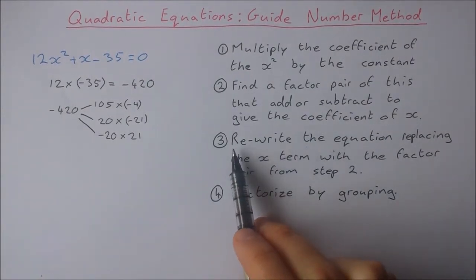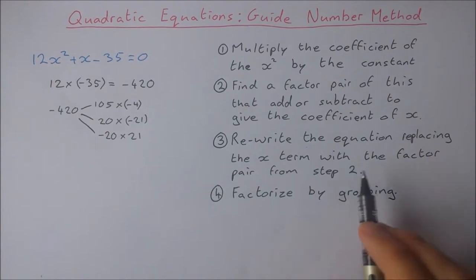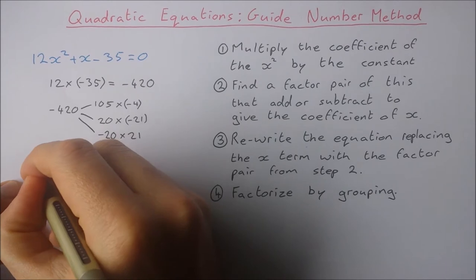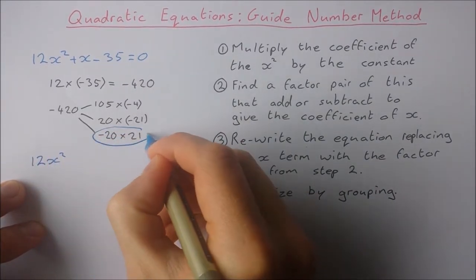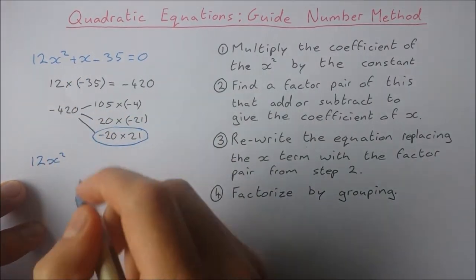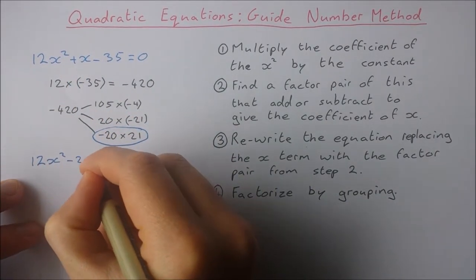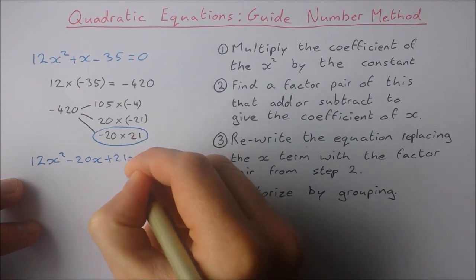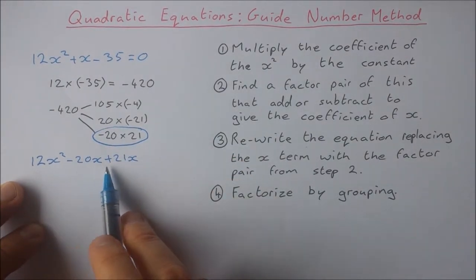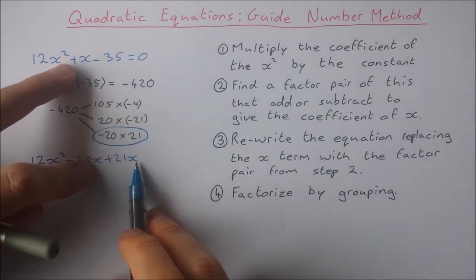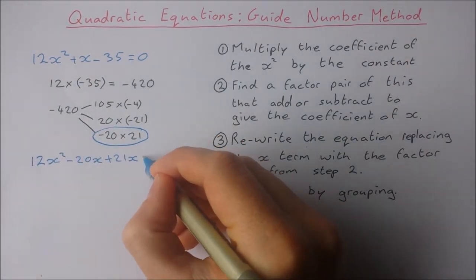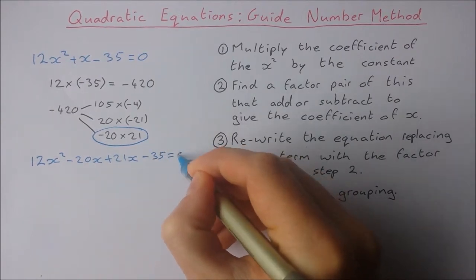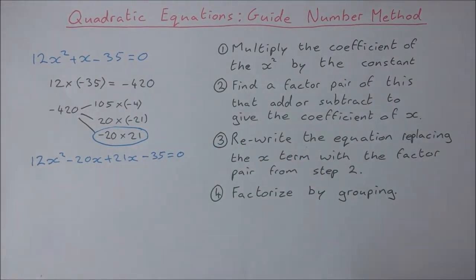Step 3: rewrite the equation replacing the x term with the factor pair from step 2. So I rewrite my equation: 12x². Now instead of writing x, I'm going to write -20x plus 21x. Now -20x plus 21x is equal to plus x, so I haven't changed the value of the equation at all. Now I have -35 and it's still equal to 0. That's step 3.